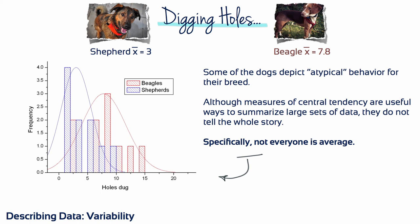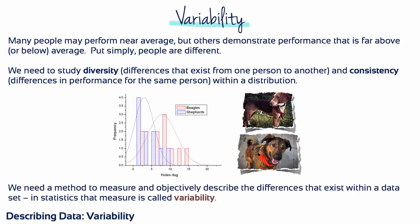In other words, not every dog is average. This is true for humans too. While many people perform near average, others do things that are far above or below average. Put simply, people are different. To study how different or similar people are from one another, or scores are from one another, we need a statistical method to measure and objectively describe the differences that exist within a set of scores. In statistics, this measure is called variability.